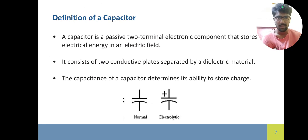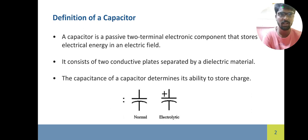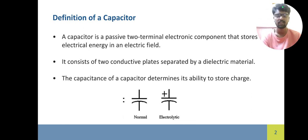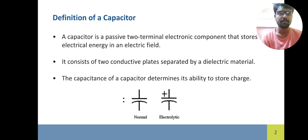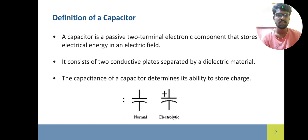A capacitor is a passive two-terminal electronic component that stores electrical energy in an electric field. It consists of two conductive plates separated by a dielectric. The capacitance of a capacitor determines its ability to store charge.